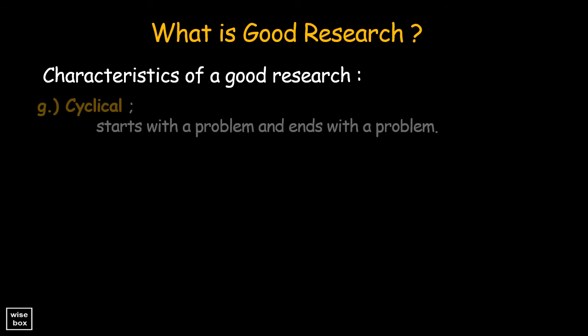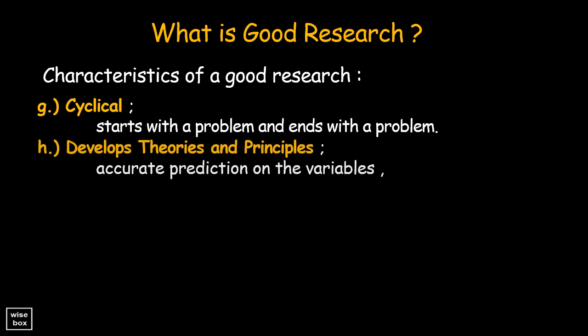Research is a cyclical process because it starts with a problem and ends with a problem. Theories and principles are very helpful in accurate prediction regarding the variables under study. Based on the research, researcher makes generalizations regarding the whole population. Thus, research goes beyond immediate situations, objects, or groups being investigated by formulating a generalization or theory about these factors.